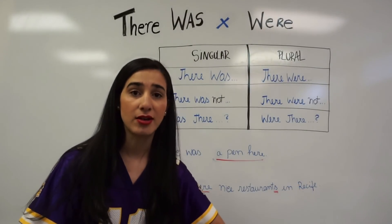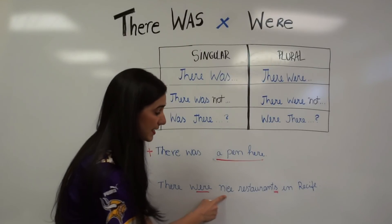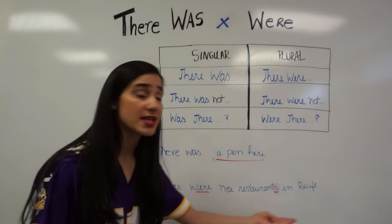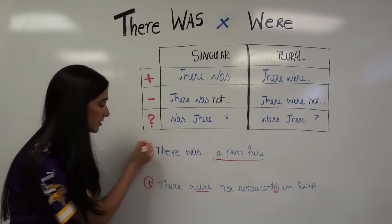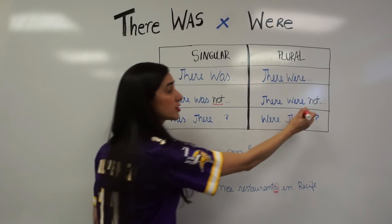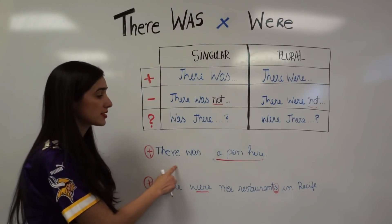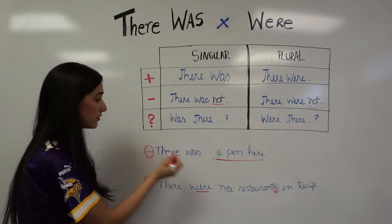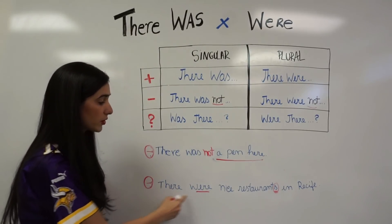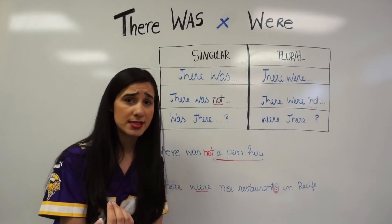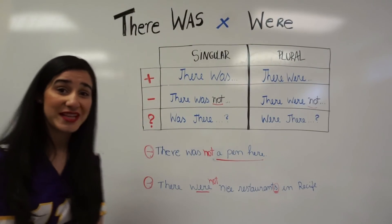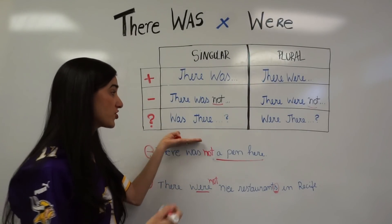For plural affirmative sentences, use 'there were' with plural objects: 'There were nice restaurants in Recife.' To form a negative sentence, simply add 'not' after 'was' or 'were': 'There was not a pen here,' and 'There were not nice restaurants in Recife.' Isn't it easy?